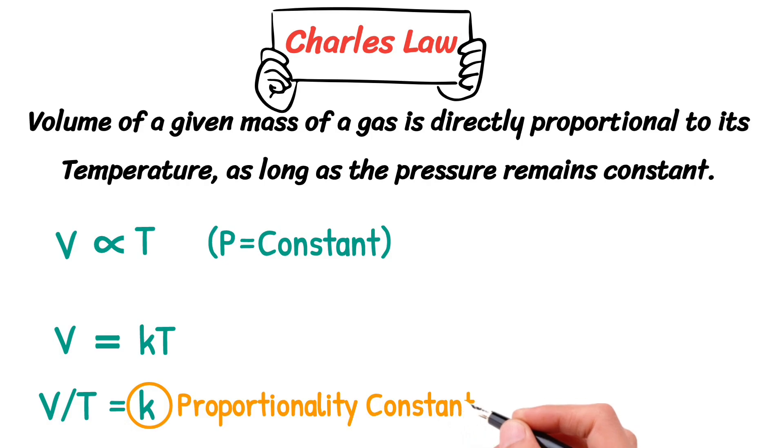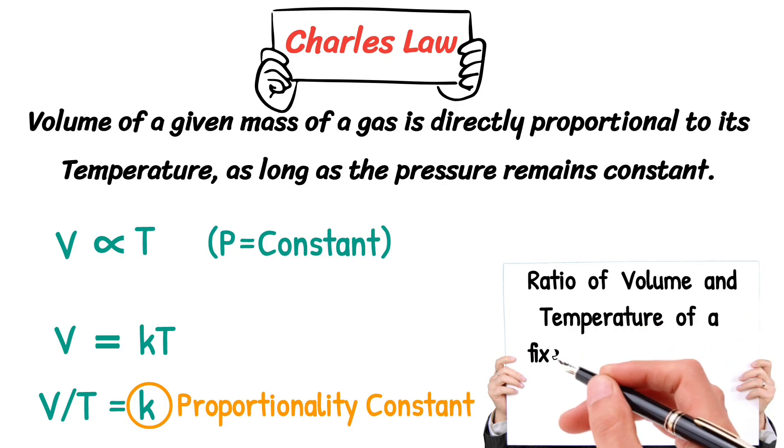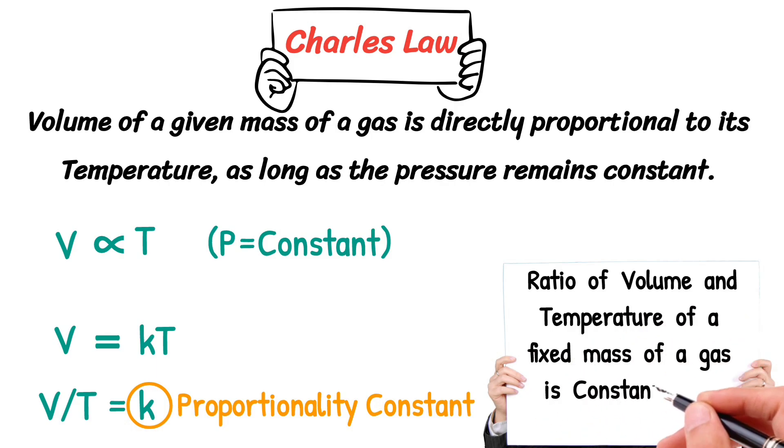The value of K is the same for the same amount of a given gas. Therefore, Charles's Law can be stated as: the ratio of volume and temperature of a fixed mass of a gas is constant at constant pressure.